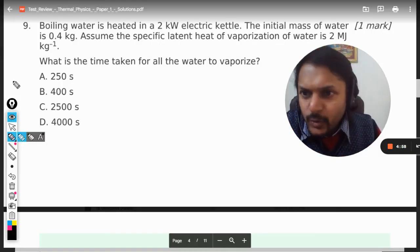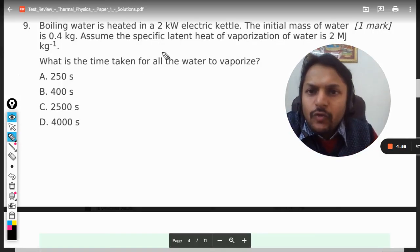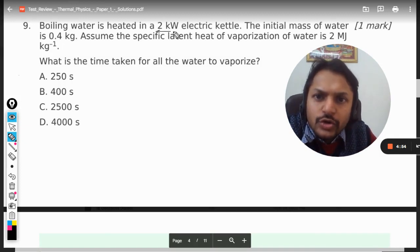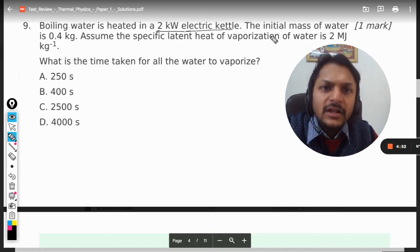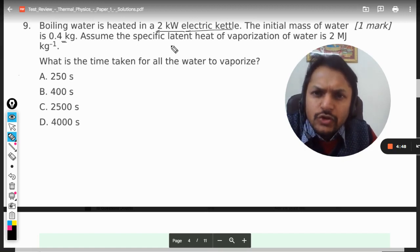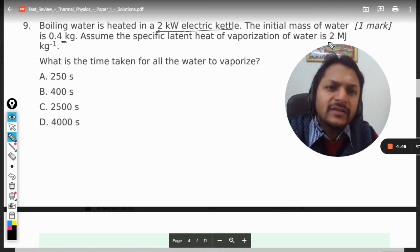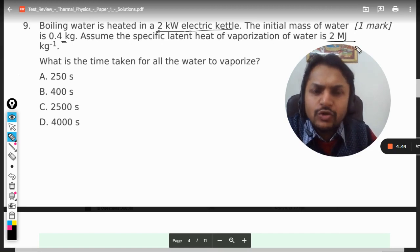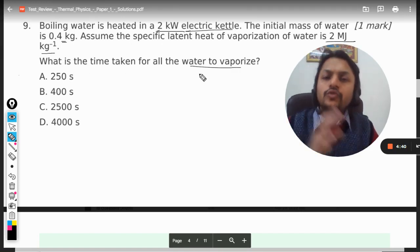Okay, so let us see what is there in this question. Boiling water is heated in a 2 kilowatt electric kettle. The initial mass of the water is 0.4 kg. Assume the specific latent heat of vaporization of the water to be 2 megajoule per kg. What is the time taken for all of the water to vaporize?